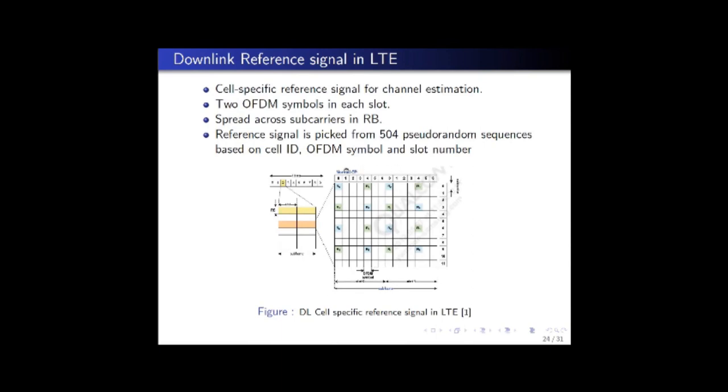As you can see from this time frequency resource grid, there are two symbols R0 and R1 in each slot which are used for pilot symbols. The remaining five symbols are the data symbols. The reference signal or pilot symbol is picked from 504 pseudorandom sequences based on cell ID, OFDM symbol, and slot number.